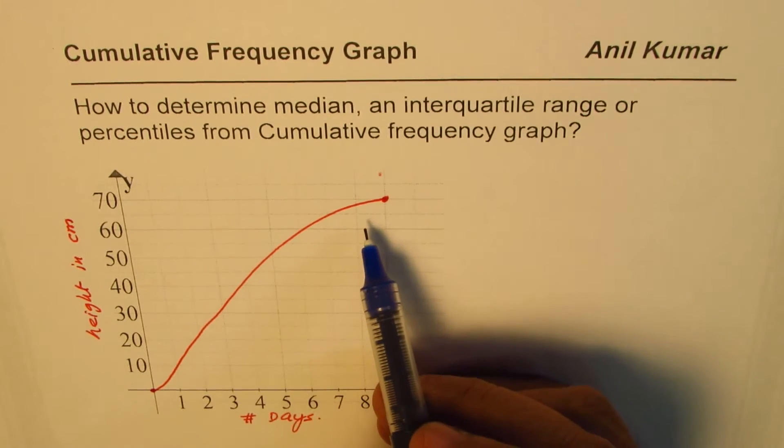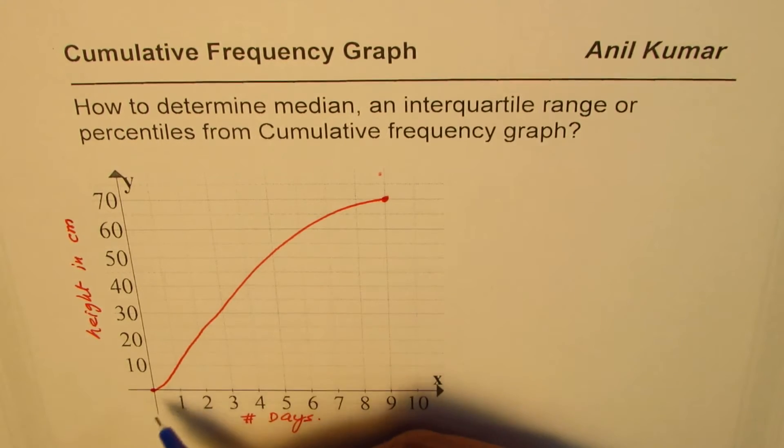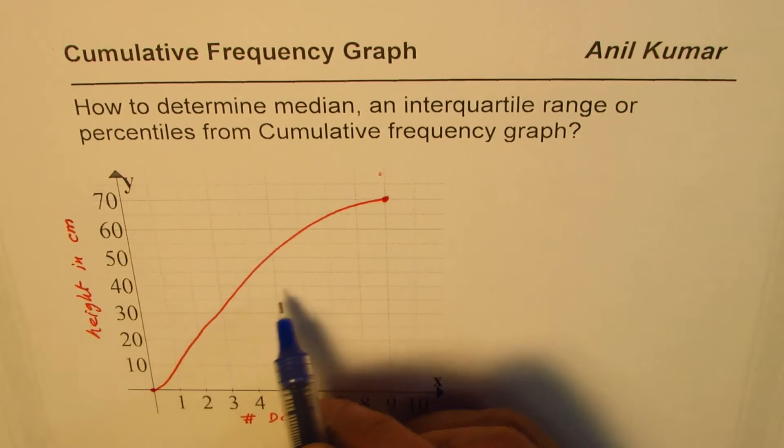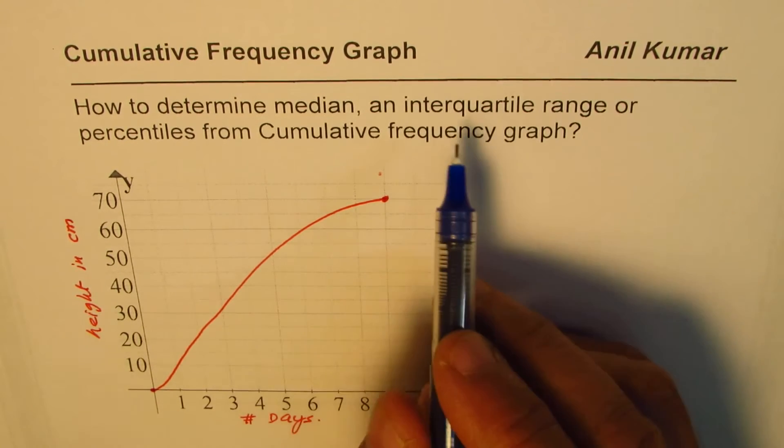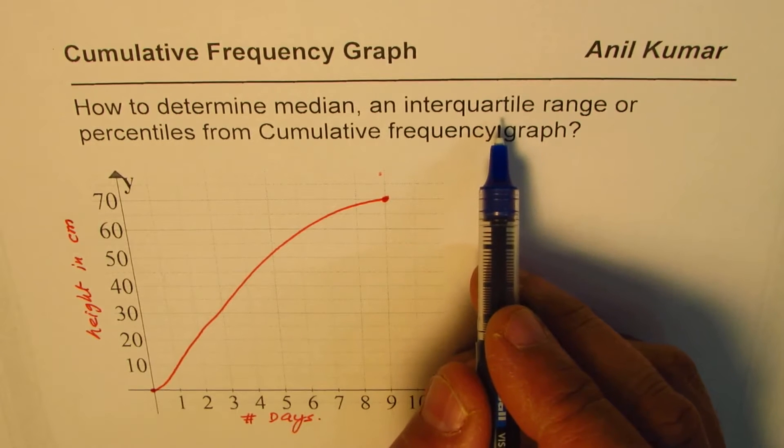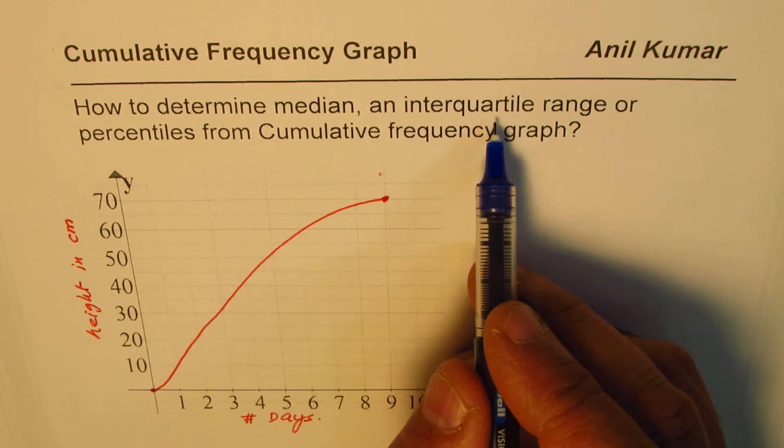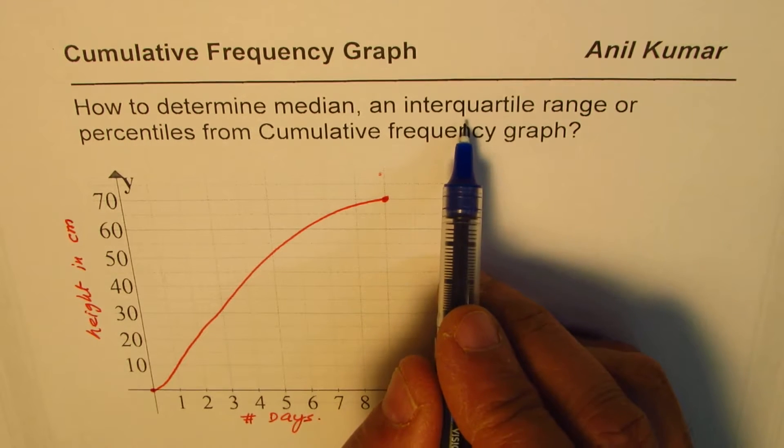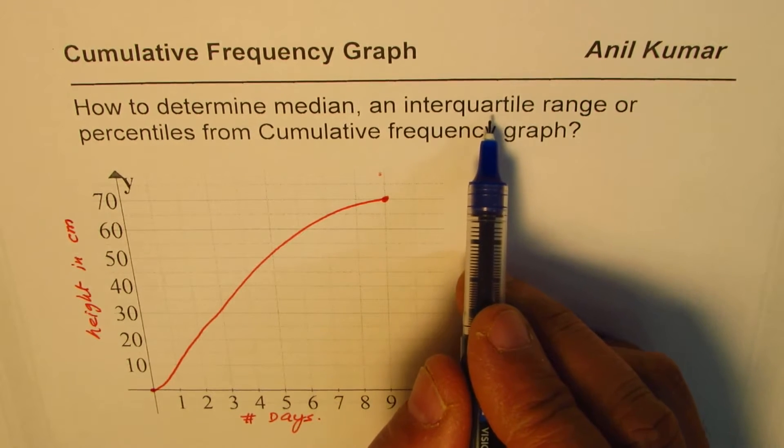Now as you know, median is the middle value, is 50% of the whole, right in the center, so that gives you the median. From the cumulative frequency graph we can actually find median as the center value. Now to find the interquartile range we'll have to find the first quartile and the third quartile. Their difference will give us interquartile range.